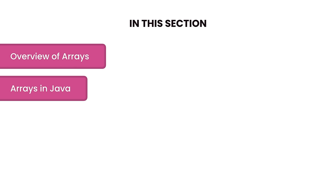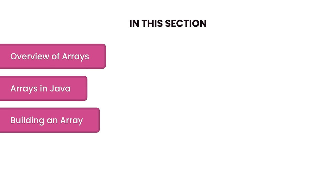In this section, we're going to talk about our very first data structure — arrays. Arrays are built into most programming languages and we use them to store a list of items sequentially. We'll look at various strengths and weaknesses of arrays, see how to use them in Java, and then build an array class from scratch. Do not skip this section even if you know arrays well.